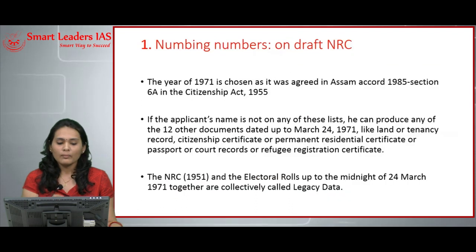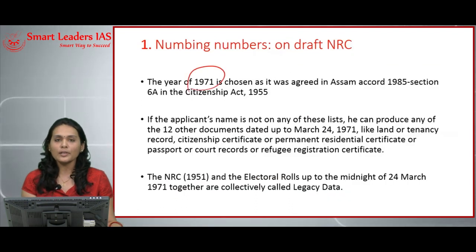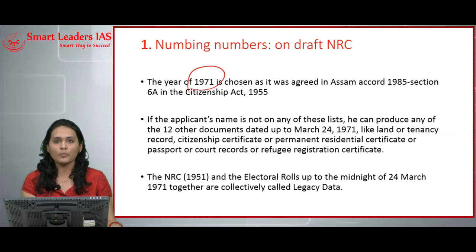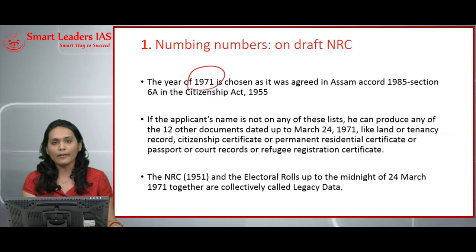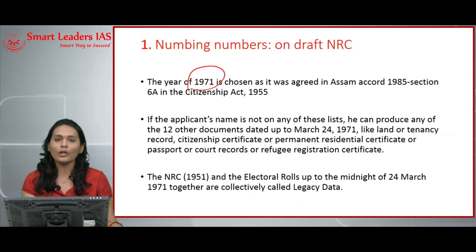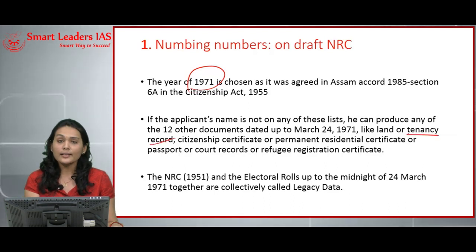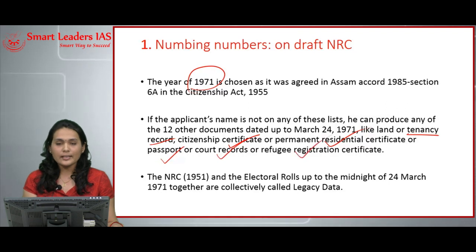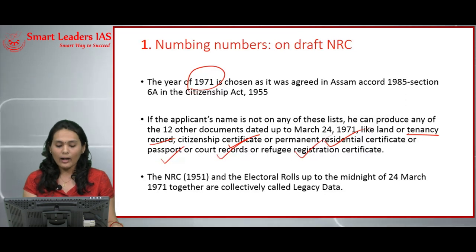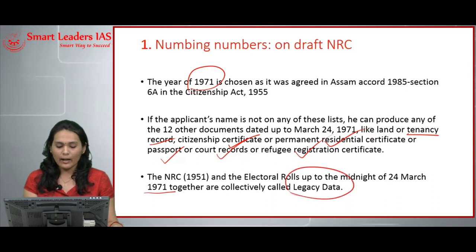This NRC is exclusive only to the state of Assam and does not apply to any other state. The year 1971 was chosen as a base because it was the year of war in eastern Pakistan and the birth of Bangladesh. If an applicant's name is not in either the 1951 or 1971 list, they can provide documents such as tenancy records, citizenship certificates, permanent residential certificates, passports, court records, or refugee registration certificates to enroll in the NRC registry.